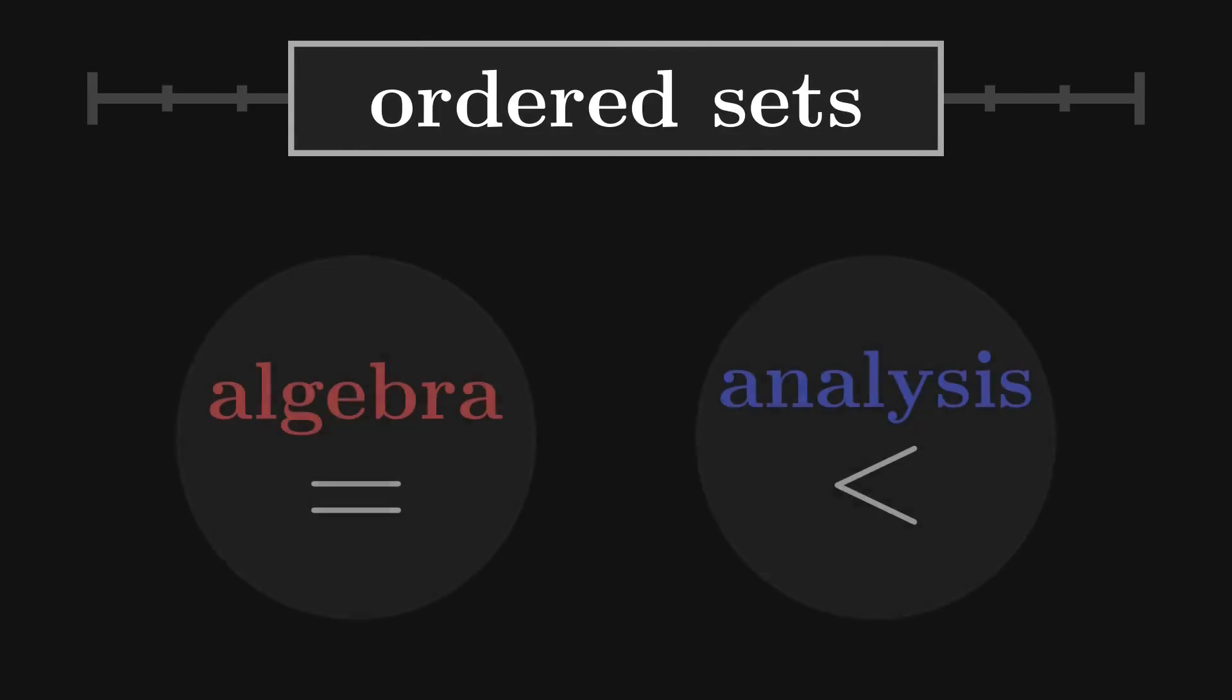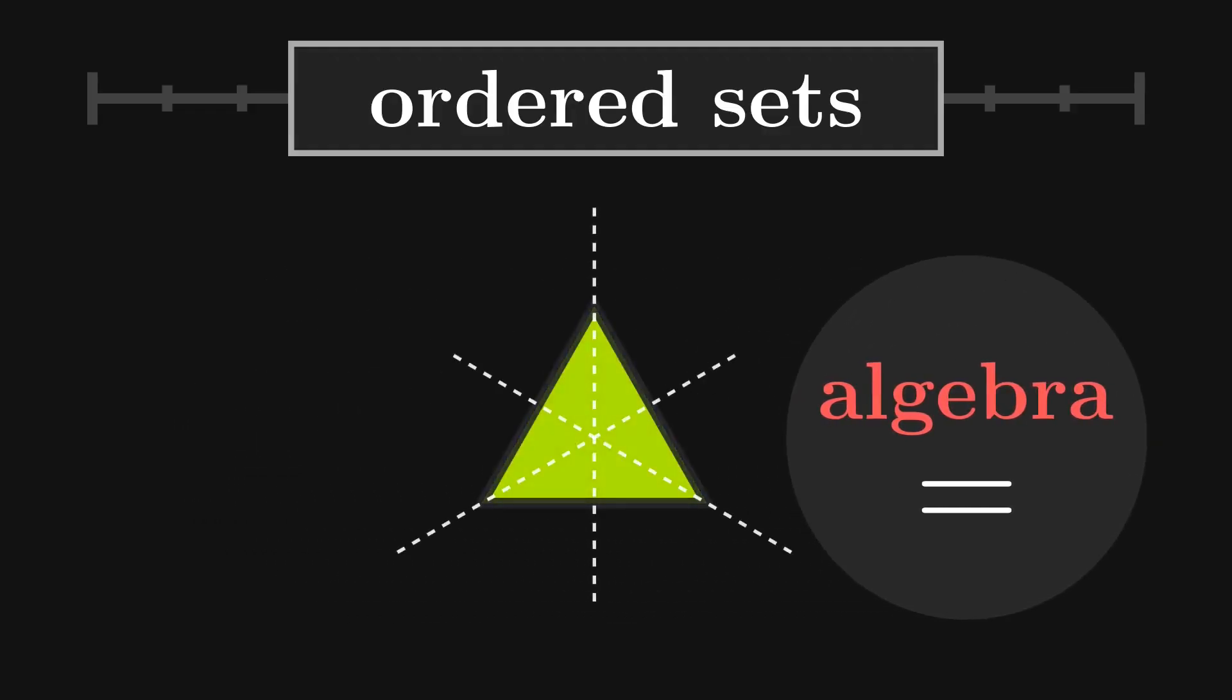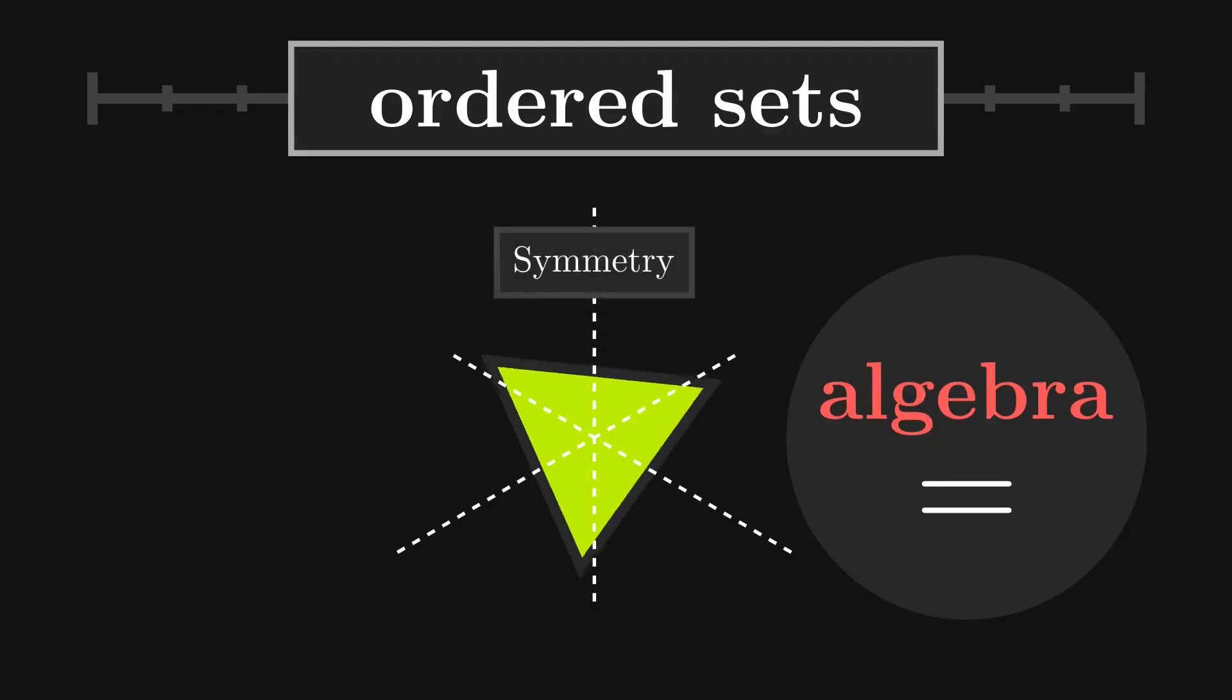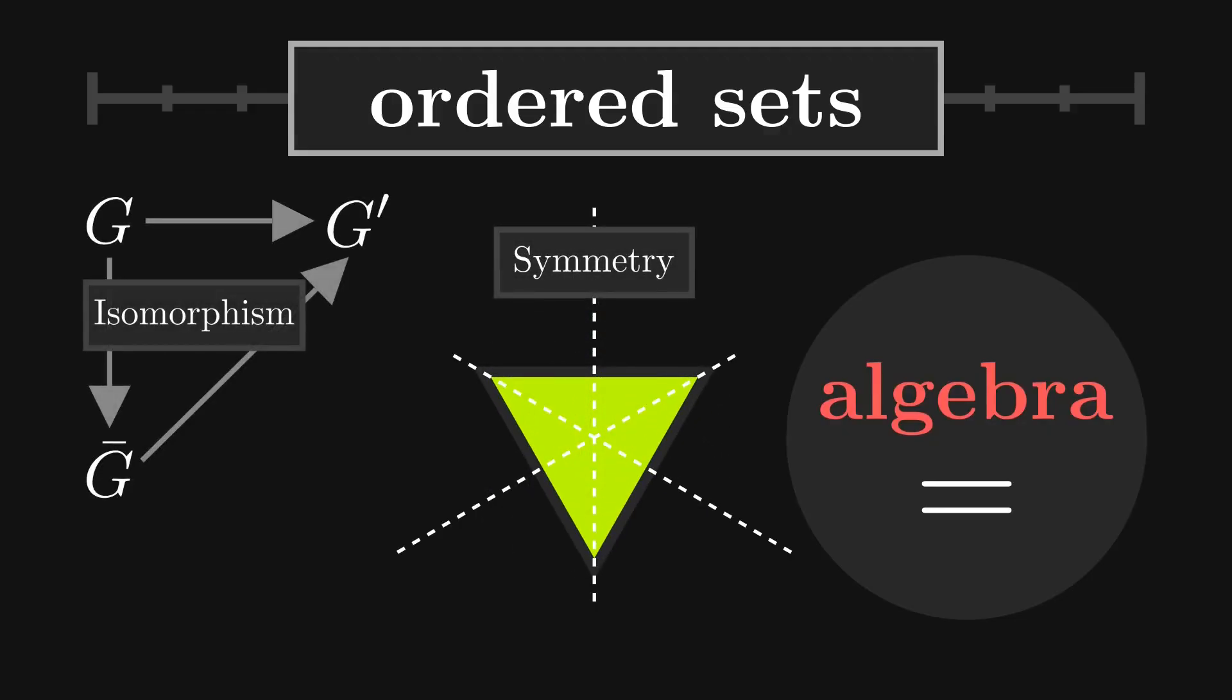Some like to say that algebra is the study of equality, while analysis is the study of inequality. In algebra, we tend to take the perspective of symmetry, focusing on how structures behave under various transformations and how relationships between variables remain balanced and equal.